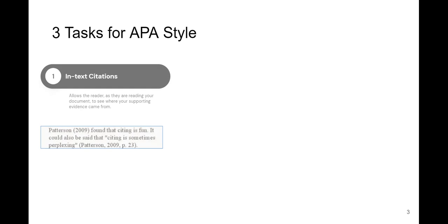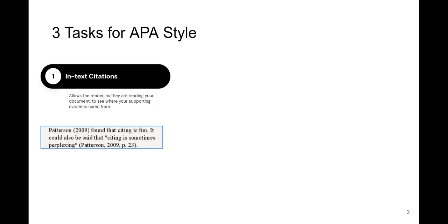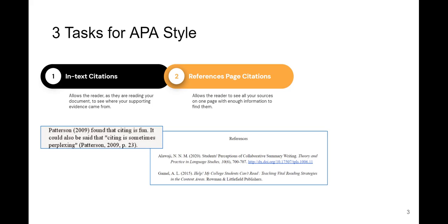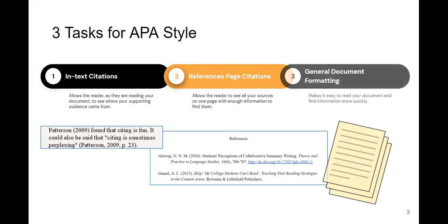The three tasks you need to do when creating a project using APA style includes creating in-text citations. In-text citations allow a reader to identify the evidence or sources you used while reading your document. Including a reference page of all the sources you used provides additional information about your sources that are not included in the in-text citations. You will also need to format your document according to the style.